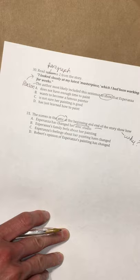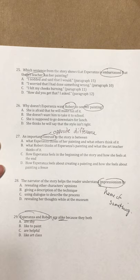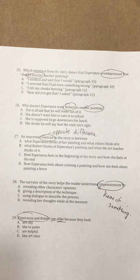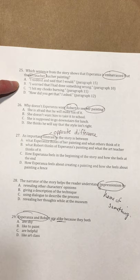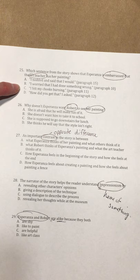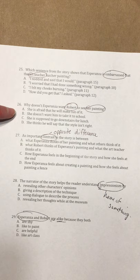So I'm just going to read the questions and the answer choices so you can do your best work. Remember to go back to the text for your answers. Stop the video whenever you need to. Question 25: Which sentence from the story shows that Esperanza is embarrassed that the art teacher has her painting? A: I nodded and said that I would, paragraph 15. B: I worried that I had done something wrong, paragraph 10. C: I felt my cheeks burning, paragraph 11. D: How did you get that? I asked, paragraph 12.